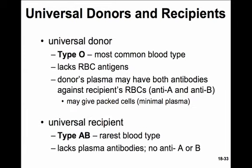The universal donor is type O blood — the most common blood type, and it lacks any red blood cell antigens, so there are no A or B labels on it. However, the donor's plasma may have antibodies against the recipient's red blood cells — anti-A and anti-B. Because of this, often packed red blood cells are given with minimal plasma, so those antibodies won't be present to attack the recipient's blood.